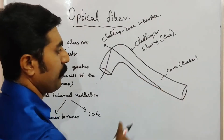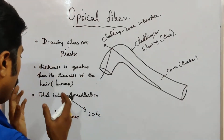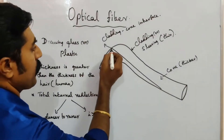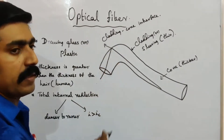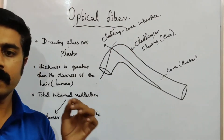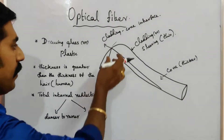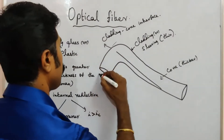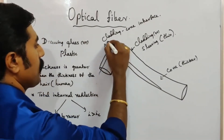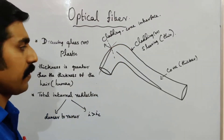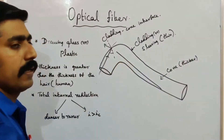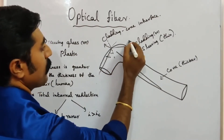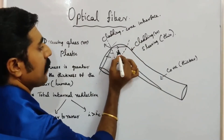The number of reflections occurs such that the full rays reflect. For total internal reflection, the angle of incidence should be greater than the critical angle. Let us draw a normal line to the surface — the angle between the normal line and the incident ray is called the angle of incidence.